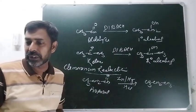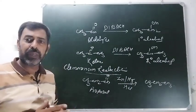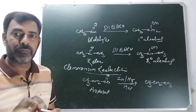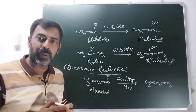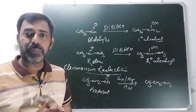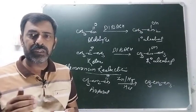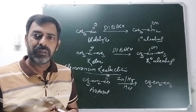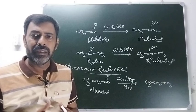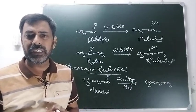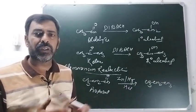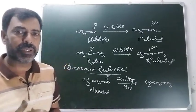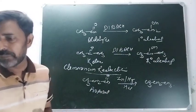Alkane का formation होता है Clemmensen reduction में। Strong reducing agent zinc को use किया जाता है in presence of mercury। Mercury और zinc के mixture को हम कहते हैं zinc amalgam। Impurified zinc, rate of reaction को under control रखता है। ज्यादा impure material देंगे तो reaction rate थोड़ा कम हो जाएगा। So this is called the Clemmensen reduction.